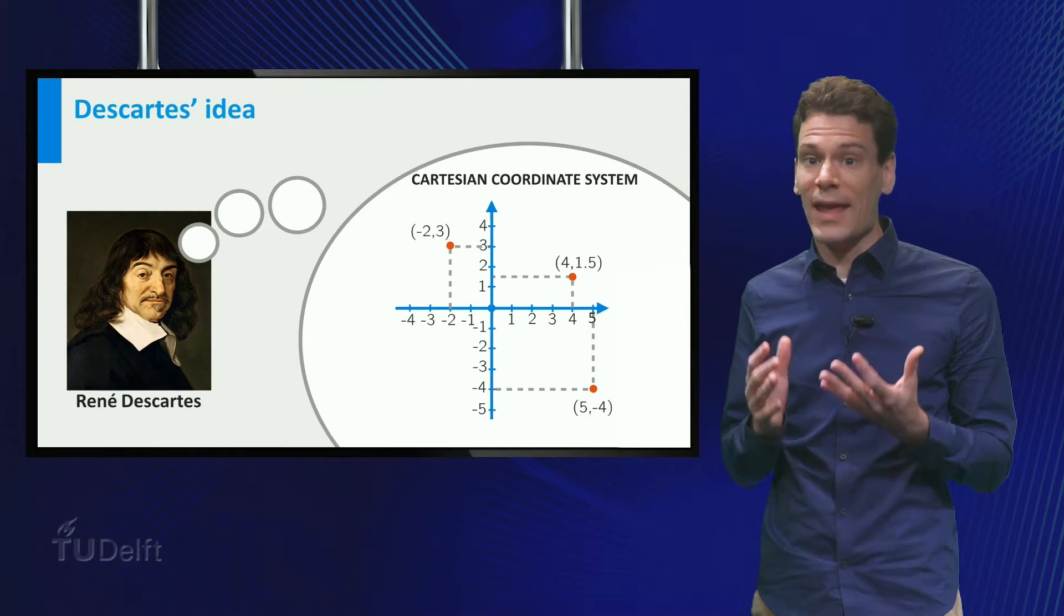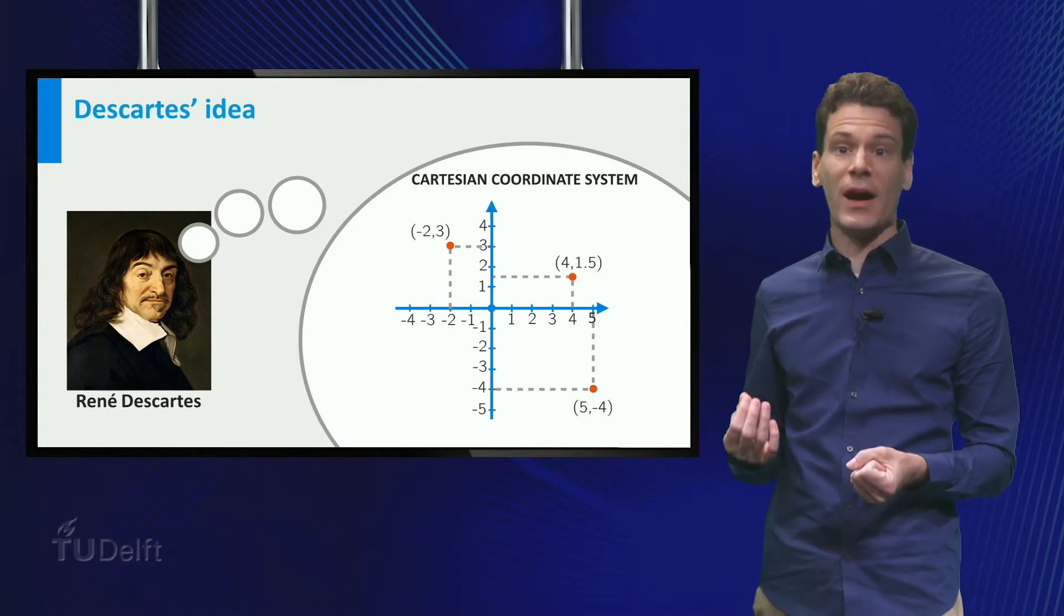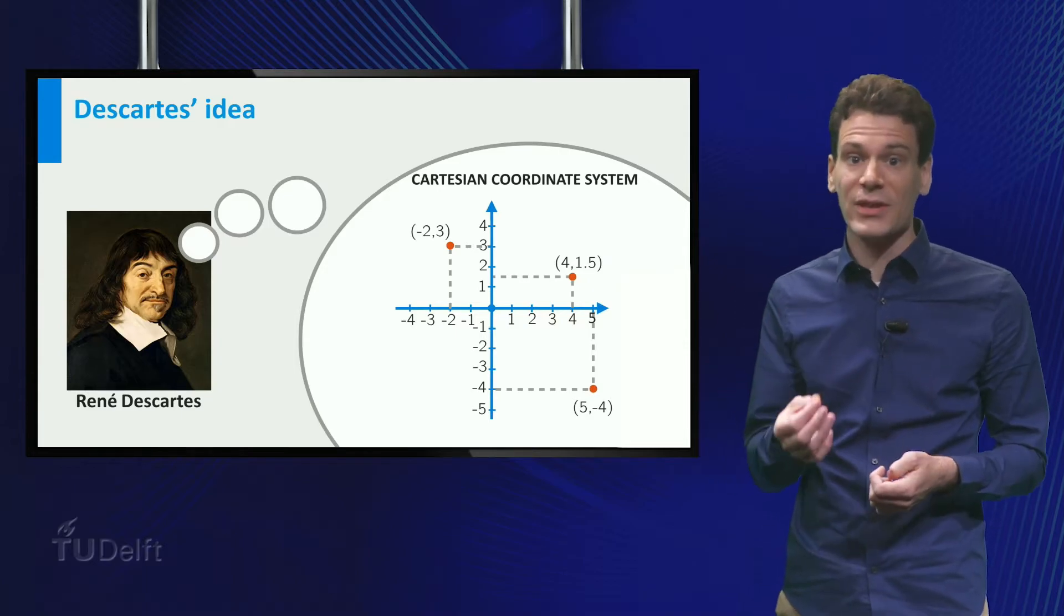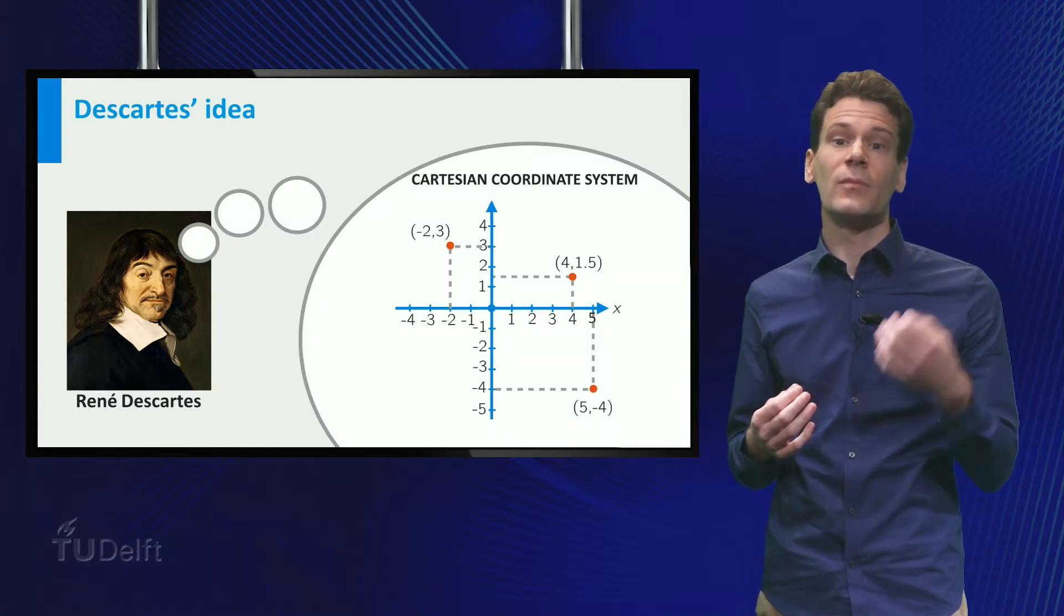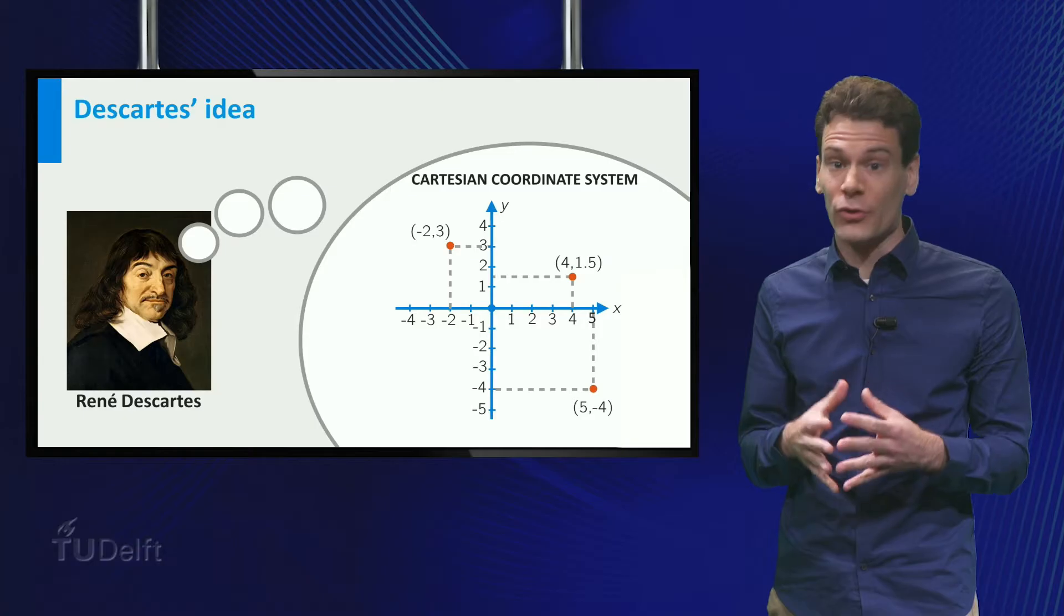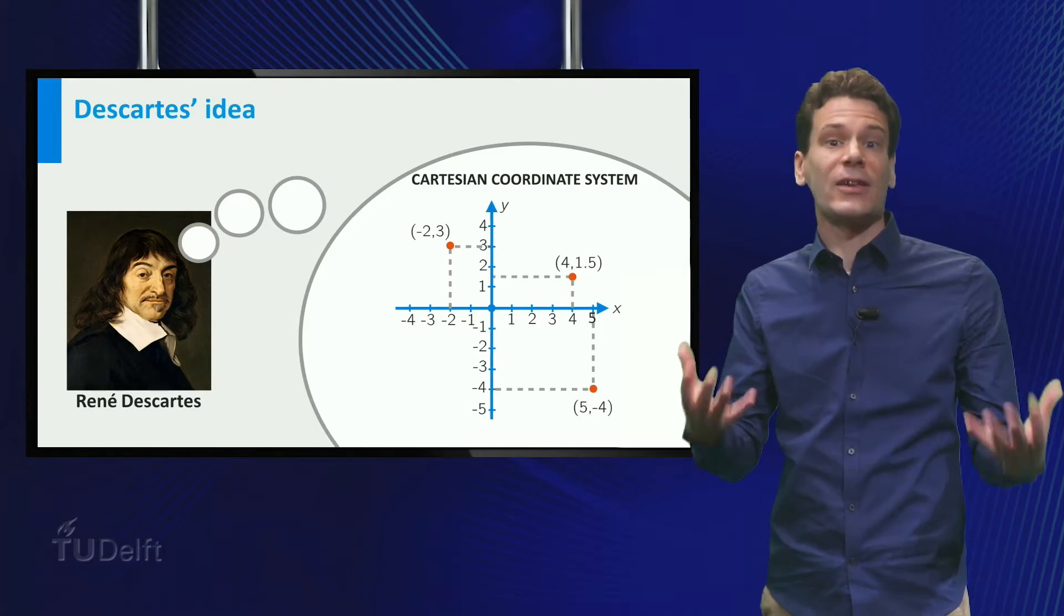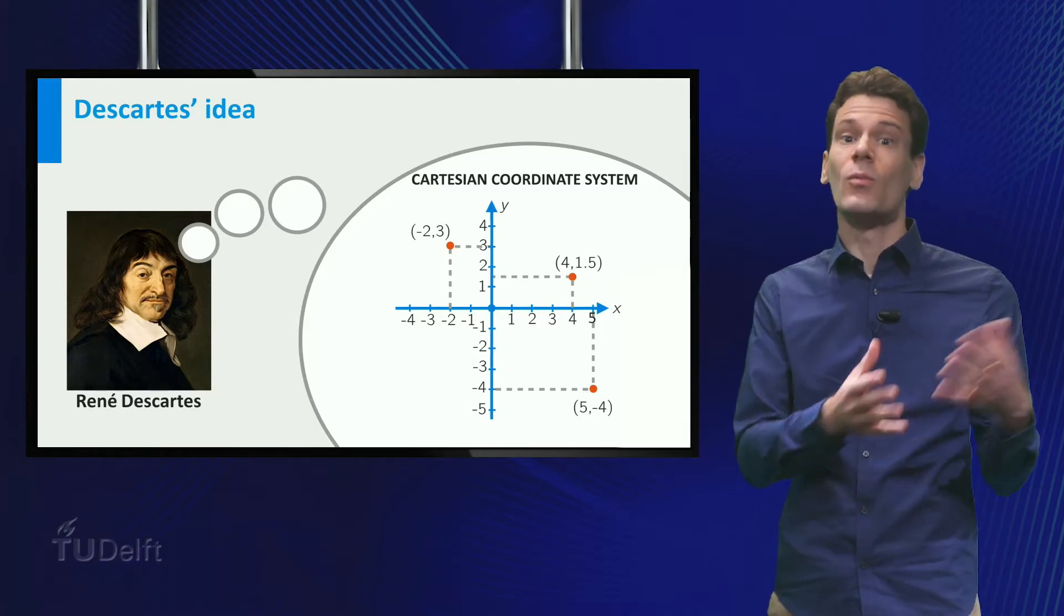It is customary to label the axes so that we can tell them apart. Typically, the axis that corresponds to the first coordinate is labeled x and the other one y. The first coordinate of a point is then called the x coordinate, and the second one the y coordinate.